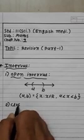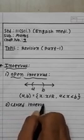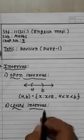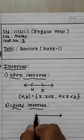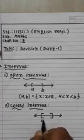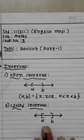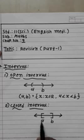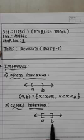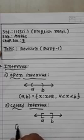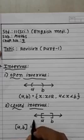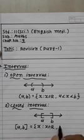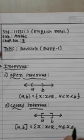The second type is the closed interval. In a closed interval, we use big brackets [A, B]. The meaning of this interval is all values between A and B, and we also include A and include B. Symbolically, closed interval [A, B] is equal to the set of X from X belongs to R, A less than or equal to X less than or equal to B.